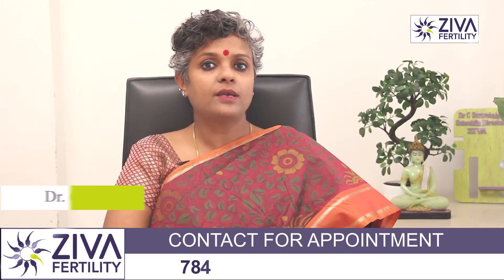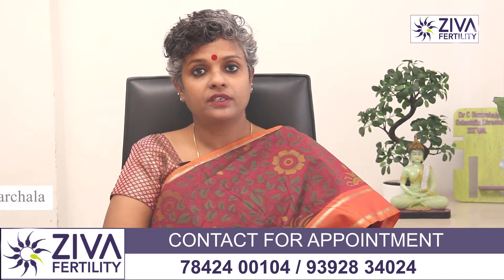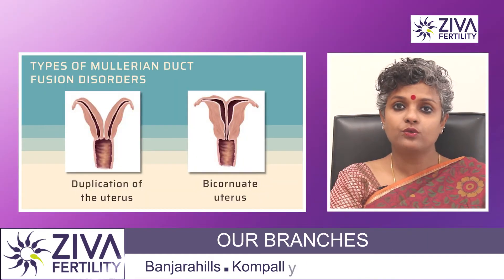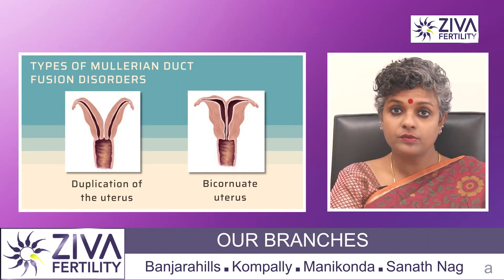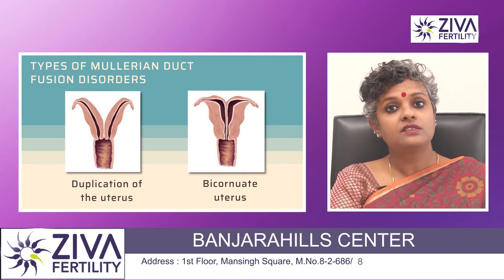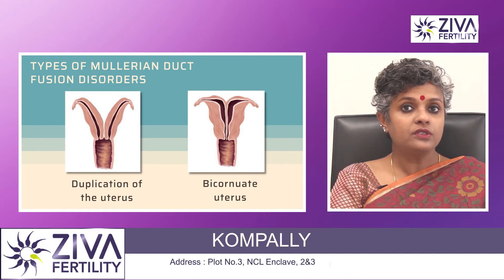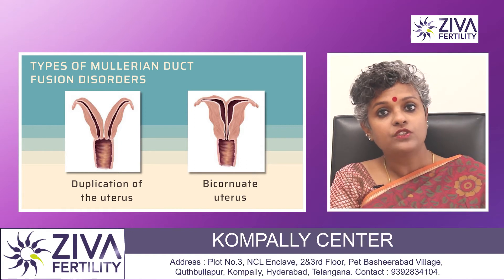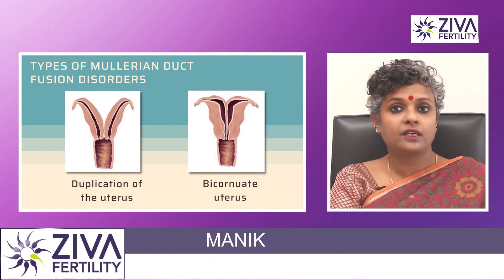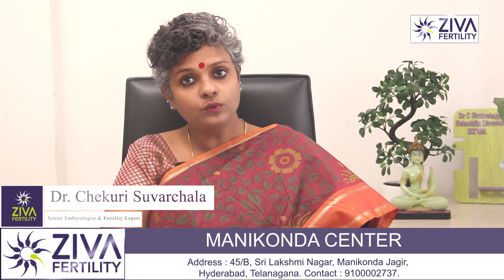What are the types of Mullerian duct fusion disorders which can cause infertility? A complete duplication of the uterus can sometimes be seen — in this situation, a woman has two uteri, cervix, and vaginas. A bicornuate uterus is one in which two uteri share a single cervix and vagina. This can cause painful periods if the cervix does not allow blood to flow through, and can be corrected with surgery.